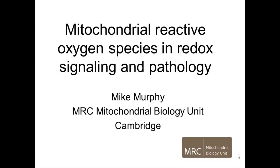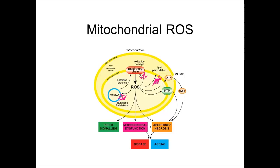What I wanted to do is give an overview of how reactive oxygen species produced by mitochondria can contribute to pathology and to redox signaling. The respiratory chain produces reactive oxygen species, and these can potentially go on to cause damage to mitochondria, either by producing radicals that damage the lipids, the DNA, or the protein.